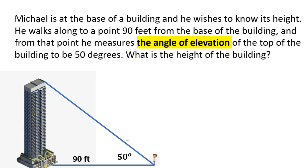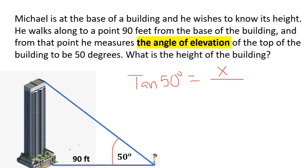Our reference angle is 50 degrees, so this is our opposite side and this is our adjacent side. Using opposite and adjacent, we're going to use tangent. Tangent 50 degrees equals opposite over adjacent, so that's x over 90 feet.